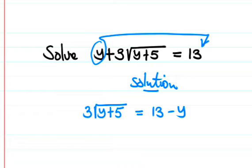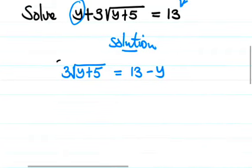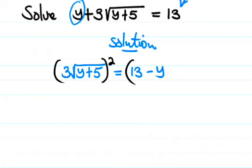We should remove this square root sign, so we square both sides. 3 root y plus 5 squared, we need to take 3 to the power of 2. 3 squared is 9, root y plus 5 squared is y plus 5, so 9 times y plus 5 is 9y plus 45.